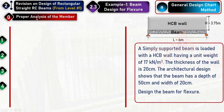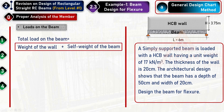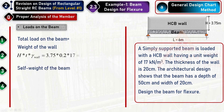The initial step is analysis of the member — determining the loads, bending moment, and shear force. The total load on the beam is the sum of the self-weight of the beam and the weight transferred from the wall. The weight of the wall equals height × thickness × unit weight, giving 12.75 kilonewton per meter.